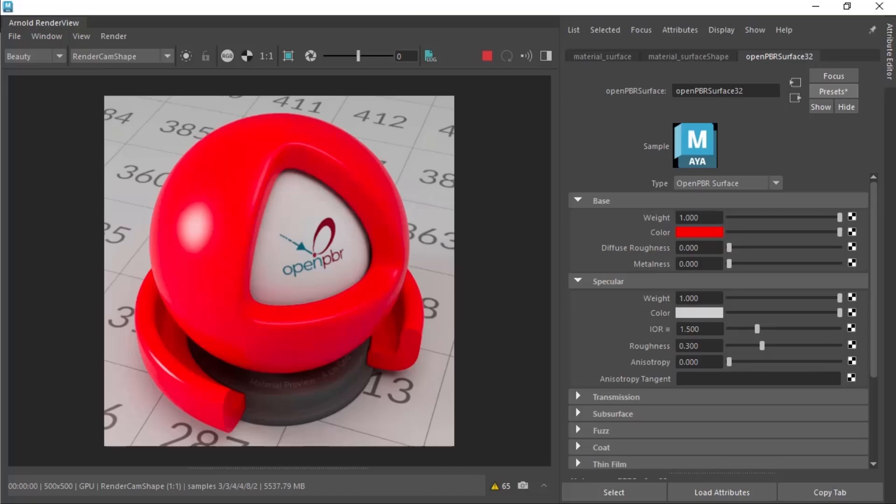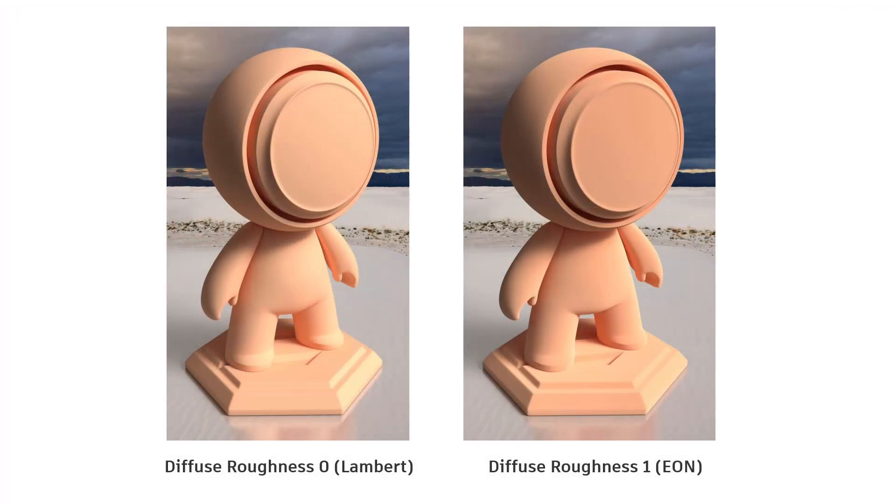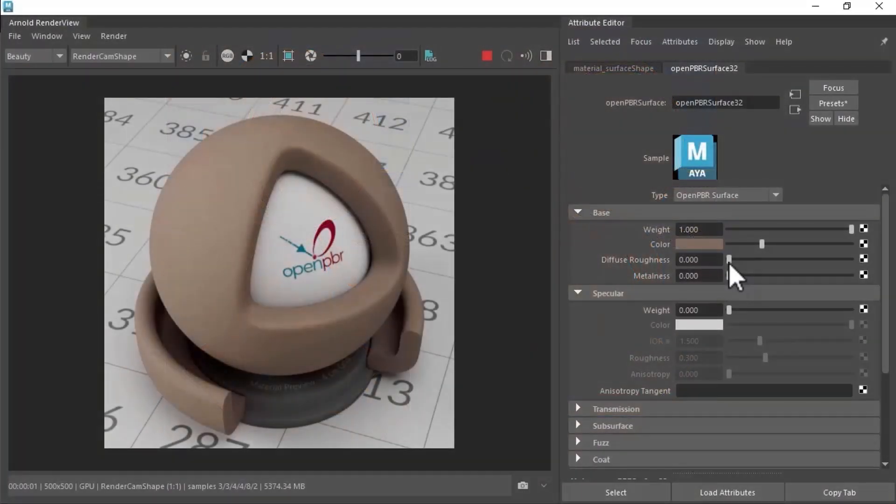OpenPBR introduced a new form of diffuse roughness called the EON model, which better preserves energy, enhancing the appearance of rough diffuse materials. The look of the diffuse reflection can be further modified using base diffuse roughness. At high values, this models the flat, dusty appearance characteristic of real diffuse surfaces.